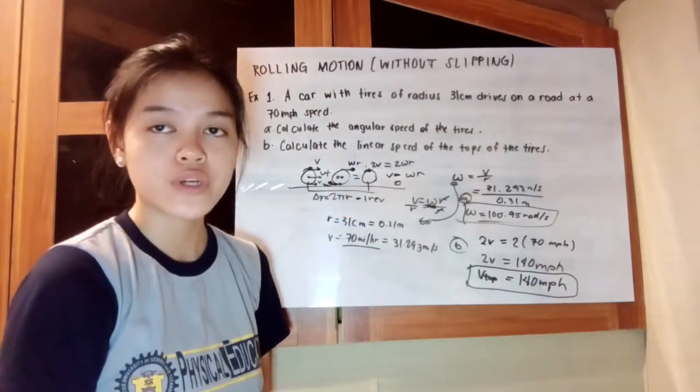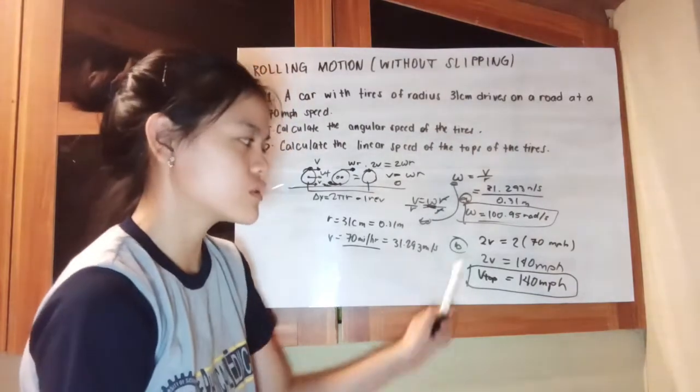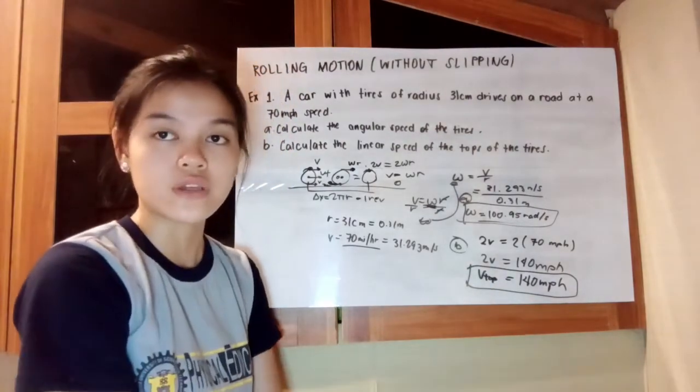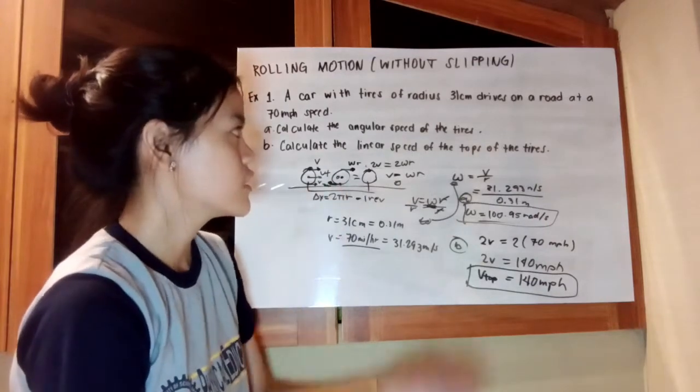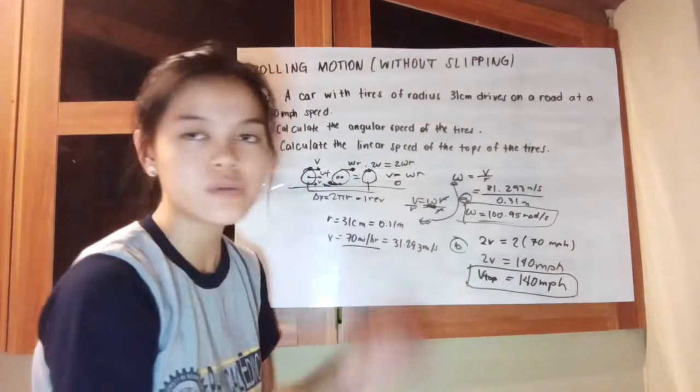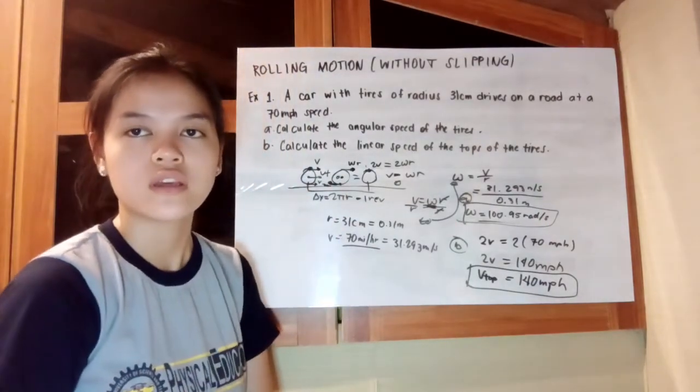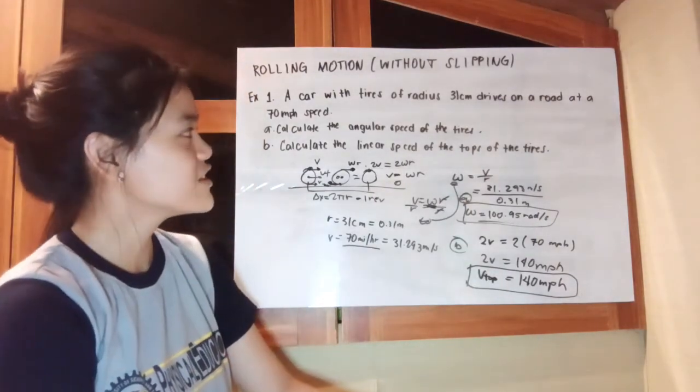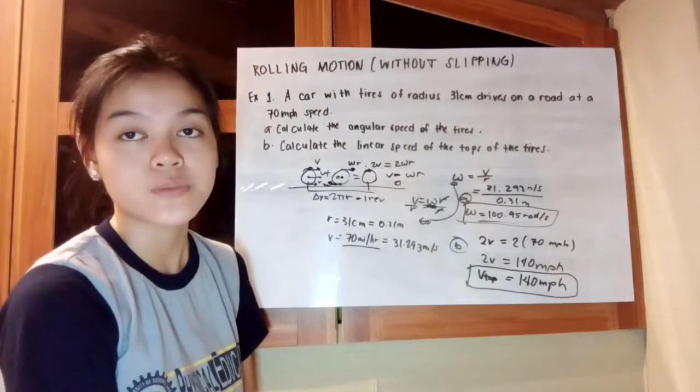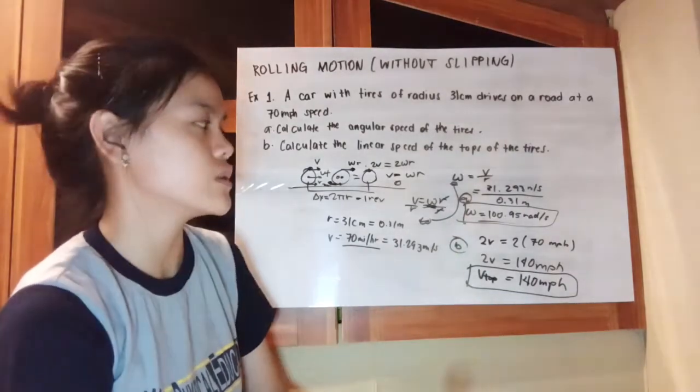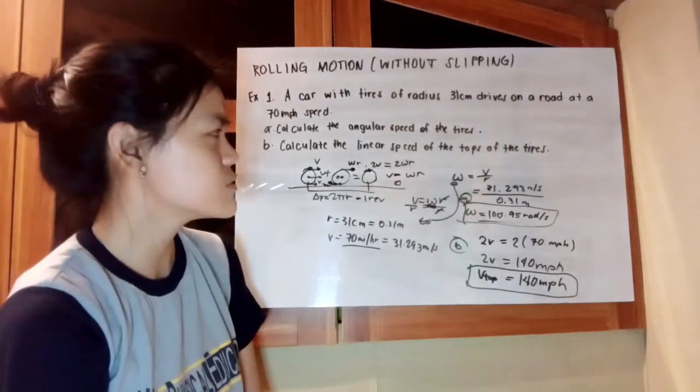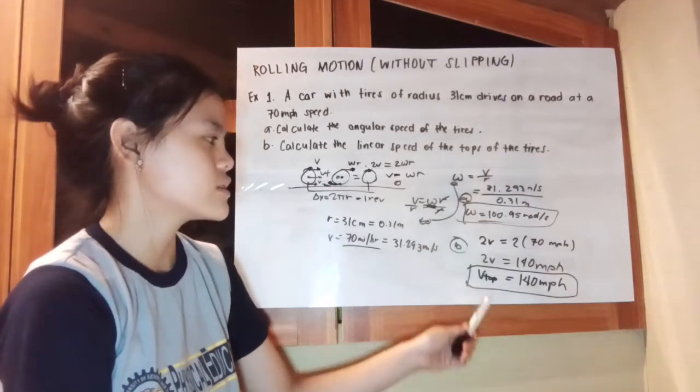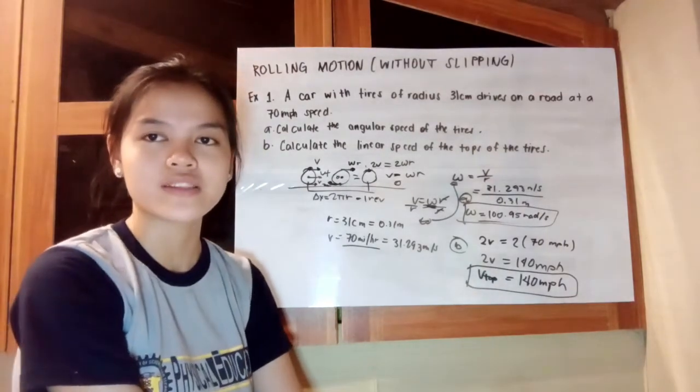If we are asked for a different unit, we can just convert this into that particular one. But since the problem is asking for nothing, we can just let it be. The angular speed that we got in this problem is equivalent to 100.95 radians per second, and the linear speed of the top of the tires is equivalent to 140 miles per hour.